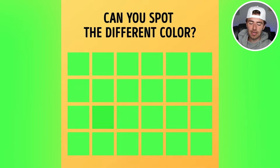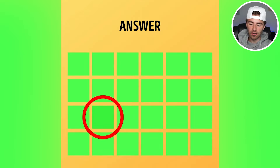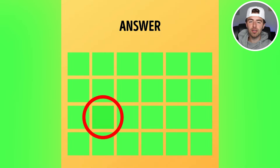The square that was a different color was this one right here, because it's a bit darker of a green. Were you able to spot this? If so, comment down below 'square.'